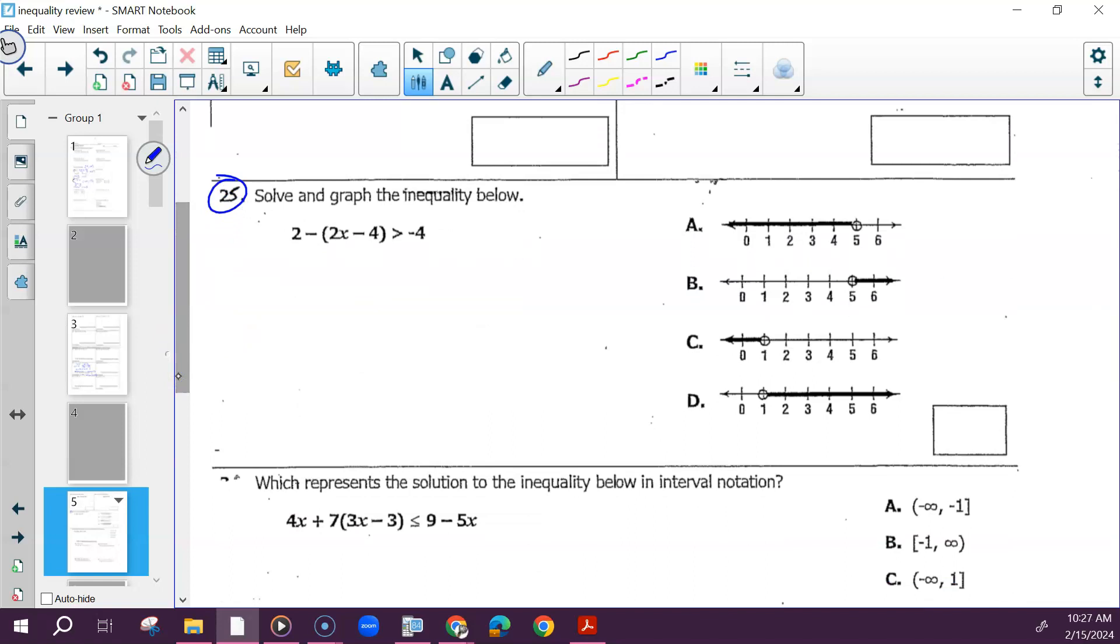So for 25, we can distribute the negative. Combine your like terms. And then, sorry, get rid of 6. And divide both sides by negative 2. Your sign would change directions. So this is going to be everything less than 5. So it's going to be shaded to the left. And that would be A. If we were doing the interval notation, that would start at negative infinity and end at 5.